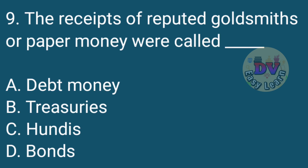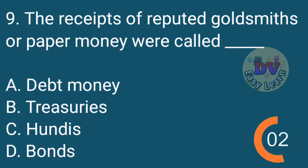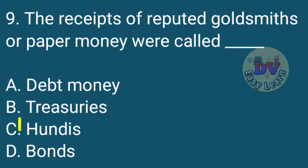Question No. 9: The receipts issued by goldsmiths or early paper money instruments were called? Correct answer: Hundis.